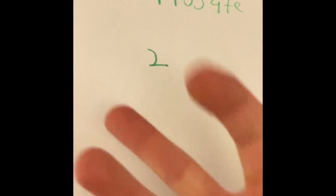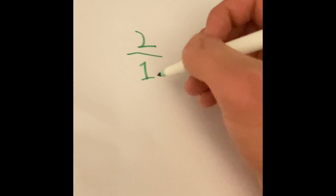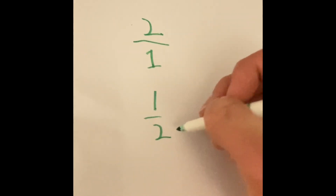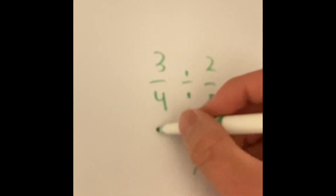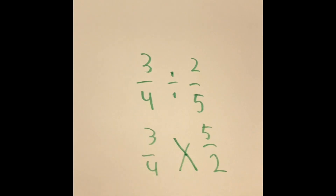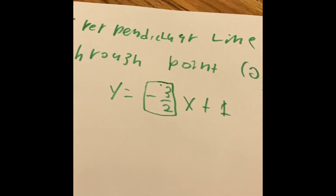Here's an example: what is the opposite reciprocal of 2? There are three steps. First, if it's not a fraction, we turn it into a fraction. Step two, we put it in reciprocal form — 2 over 1 becomes 1 over 2. This is similar to dividing fractions: 3 over 4 divided by 2 over 5 becomes 3 over 4 multiplied by 5 over 2, because division and multiplication are opposites. When finding perpendicular lines, you're finding the opposite slope intercept form.